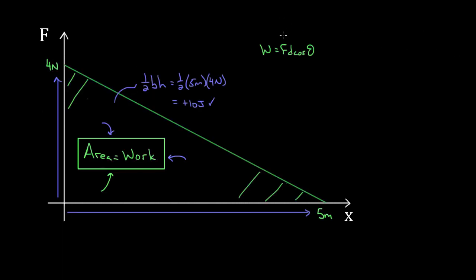Recapping: if your force is constant, you can just use W = Fd cosine theta to find the work done. But you can also find the work done by determining the area underneath a force versus position graph. This is useful because it works even when the force is varying, which would render the simple equation unusable. But if the shape of the graph is one you know how to find the area of, you can still find the work done by determining the area underneath the force versus position graph.